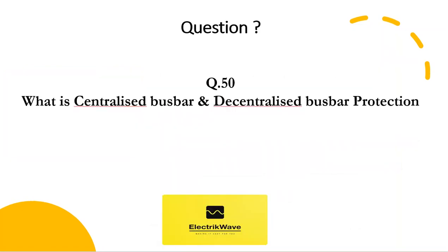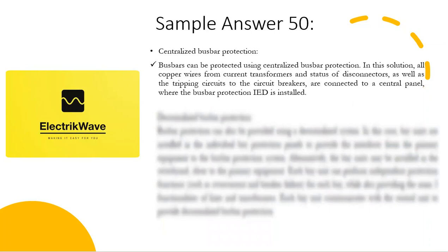Question number 50: what is centralized busbar and decentralized busbar protection? Sample answer 50: busbars can be protected using centralized busbar protection. In this solution, all copper wires from current transformers and status of disconnectors, as well as the tripping circuits to the circuit breakers, are connected to a central panel where the busbar protection IED is installed. The ebook link is given in the description box — download it and get ready for the interview.